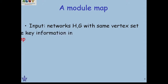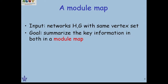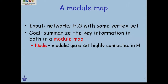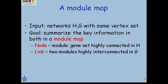So the same vertex set for H and G, and we want to summarize information from the two networks in something we call a module map. The module map has nodes that are modules — sets of genes from the vertex subsets — and we want these modules to correspond to highly connected sets in H. The links in the module map are connections between two modules that are highly interconnected in G.